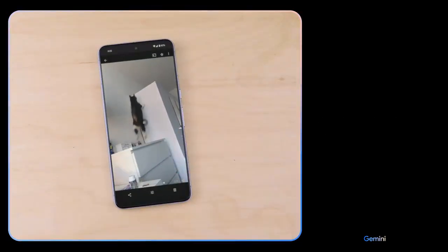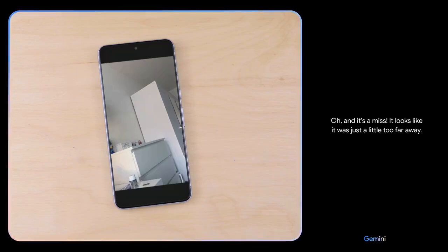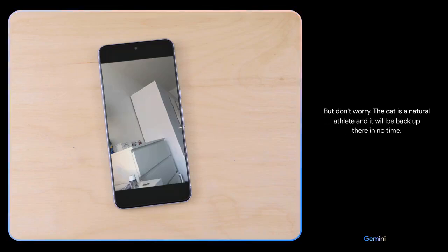What do you think might happen next? The cat is going to jump to the wall and stick the landing. It's going to be a perfect 10. Oh, and it's a miss. It looks like it was just a little too far away. But don't worry, the cat is a natural athlete and it will be back up there in no time.